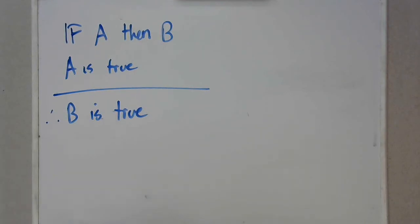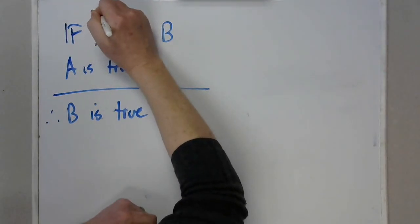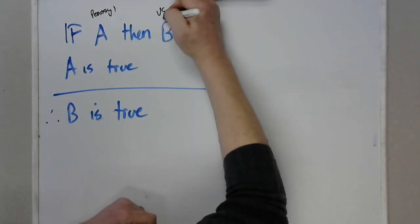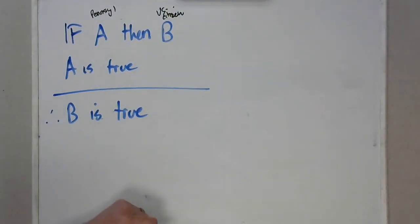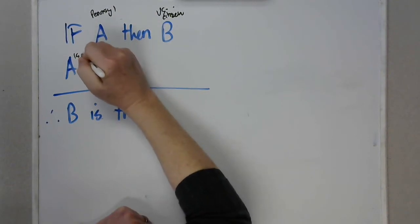Let me give you an example. The statement: if a person is born in Pennsylvania, then they are a US citizen. So if born in Pennsylvania, then US citizen. And then you point to a person and say, that person is born in Pennsylvania — therefore they are a US citizen.